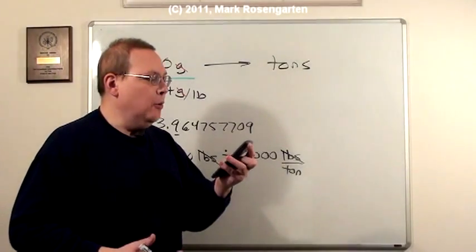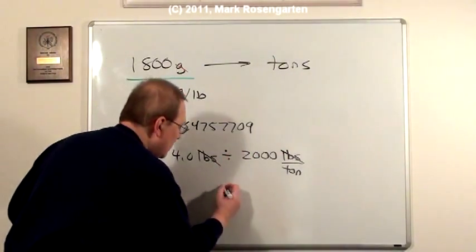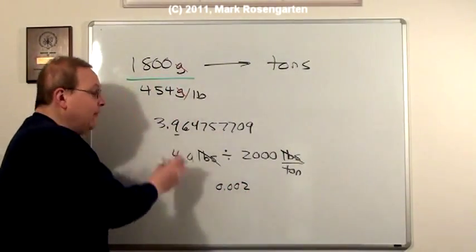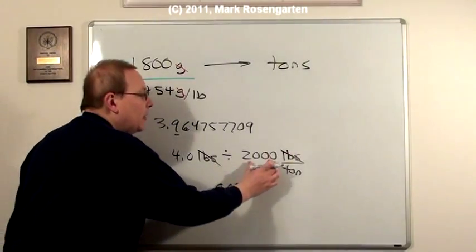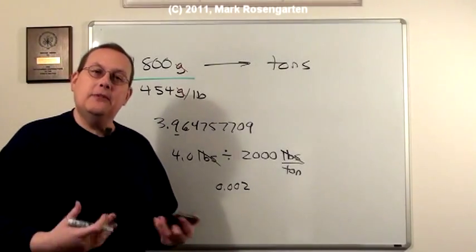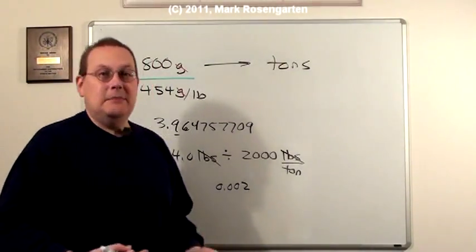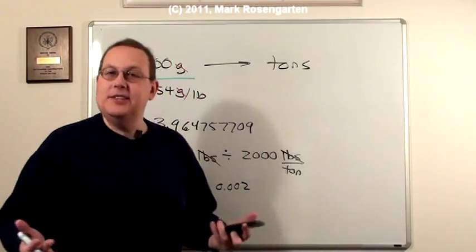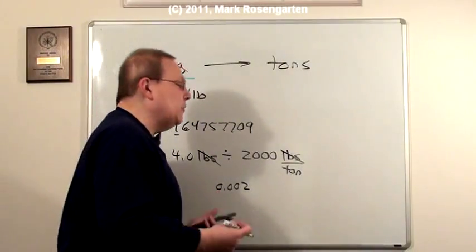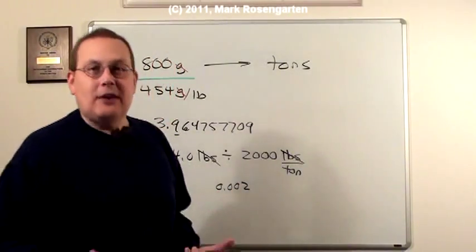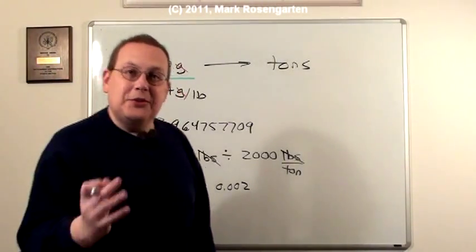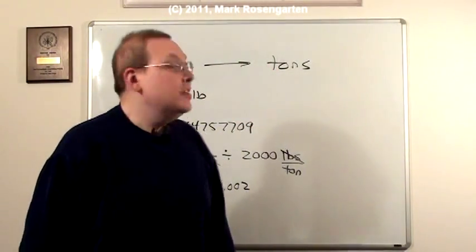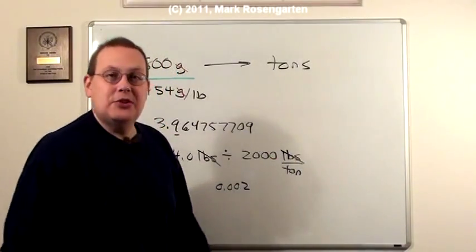And that comes out to 0.002. Now what do we do about significant figures? Well, we have two significant figures to work with, but what about our conversion factor? Well, it turns out that the conversion factor is not a measurement. It's an exact amount. There are exactly 2000 pounds per ton. There's not 200.005 or 2000.007. There's exactly 2000 pounds.